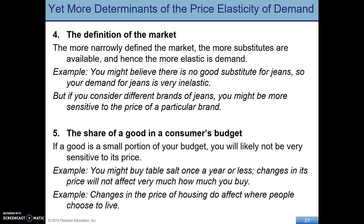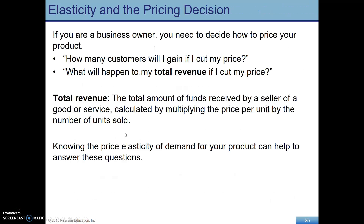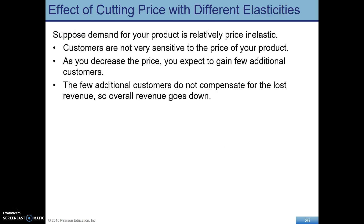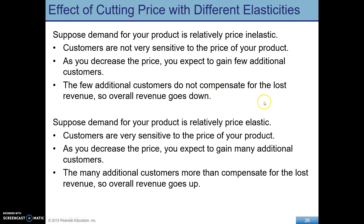Elasticity is going to matter a lot in making pricing decisions for firms. If a firm cuts the price, what's going to happen to their total revenue? Total revenue is just the amount of funds received by a seller of a good or service — that's P times Q, price per unit times the number of units sold. Knowing elasticity is going to be helpful to predict what would happen. If your product is relatively price inelastic, a small change in price isn't going to add that many new customers. But if demand is price elastic, customers are very sensitive to a change in price, so a small change would have a large impact on the number of units you actually sell.